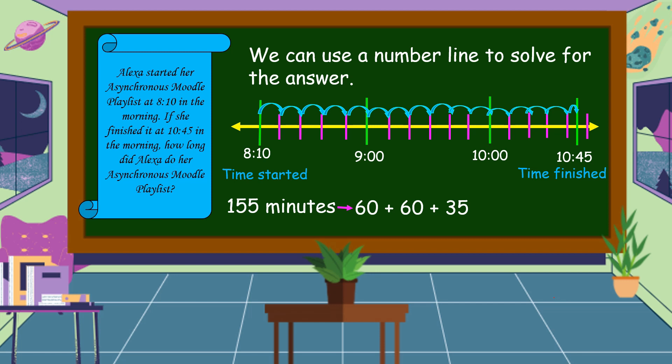Then, we're going to make it into hours. 60 is 1 hour, plus another 1 hour, that is equal to 2 hours and 35 minutes.